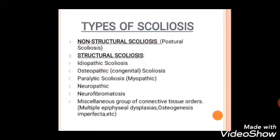The types of scoliosis fall into two important categories. The first is non-structural scoliosis, also known as postural scoliosis, because the problem is external to the spine. The second is structural scoliosis, which includes idiopathic scoliosis, osteopathic or congenital scoliosis, paralytic or myopathic scoliosis, neuropathic scoliosis, neurofibromatosis, and a miscellaneous group of connective tissue disorders such as multiple epiphyseal dysplasias and osteogenesis imperfecta.